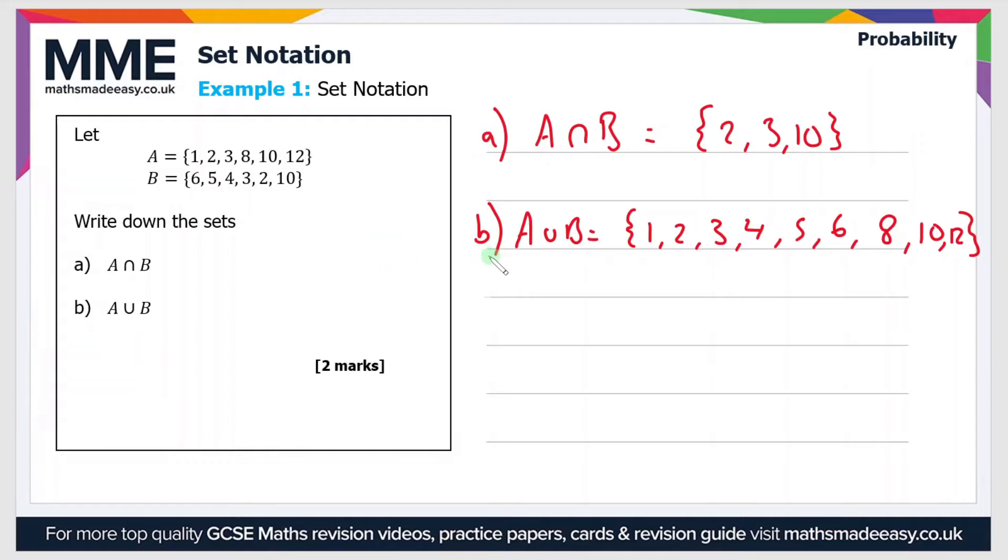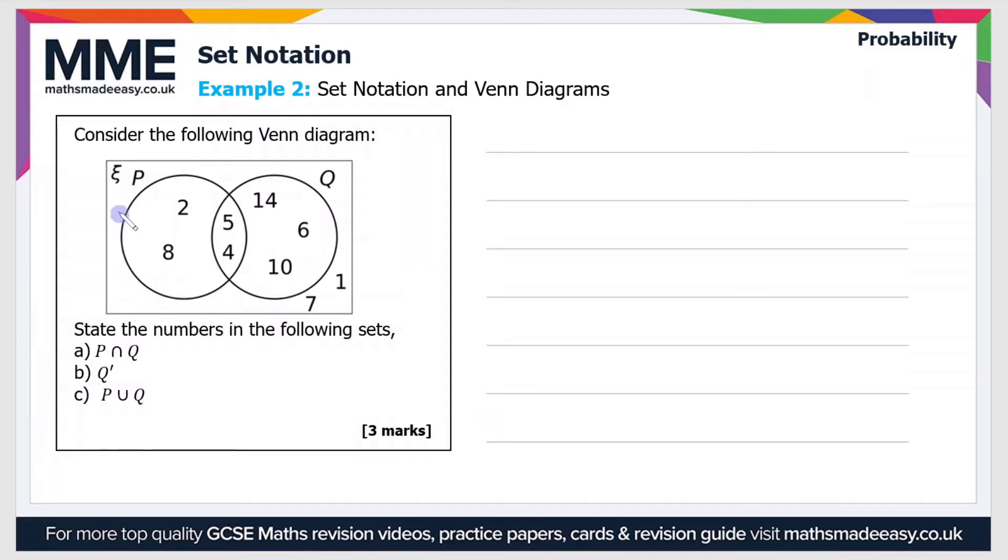So moving on to the second example then. Consider the following Venn diagram. So we've got sets P and Q plus the universal set. State the numbers in the following sets. So the first bit, part a, is P ∩ Q. So as we've seen before, that's the intersection.